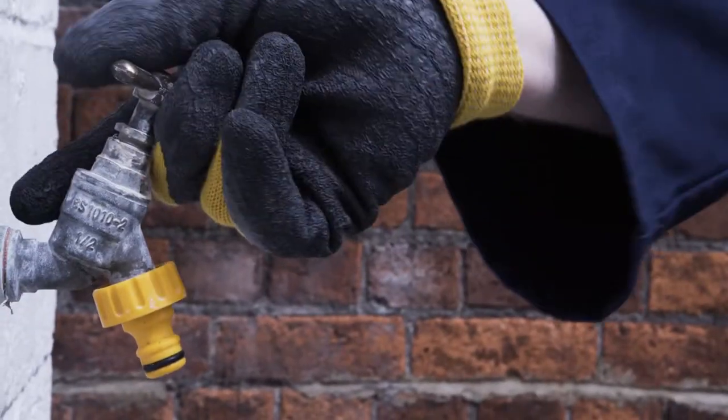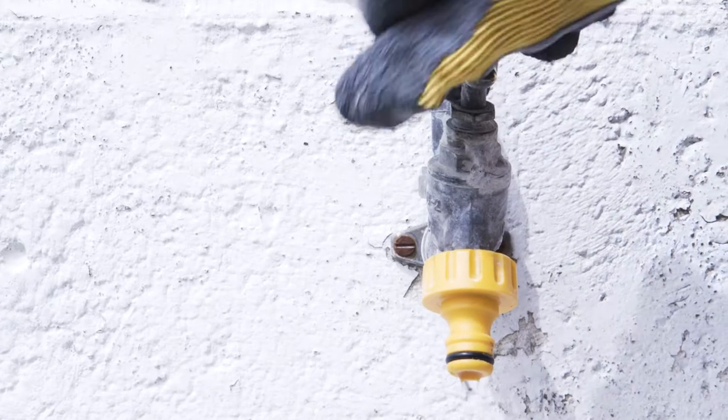To mix a full bag of breather plaster, add approximately 11 litres of clean water to the mixing bucket. You may need a little more or less water depending on conditions and temperature.